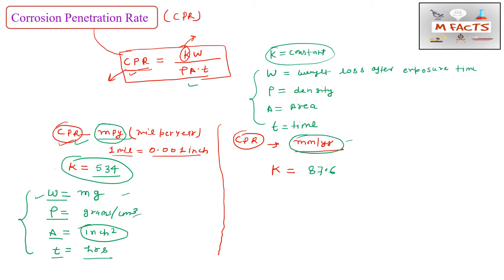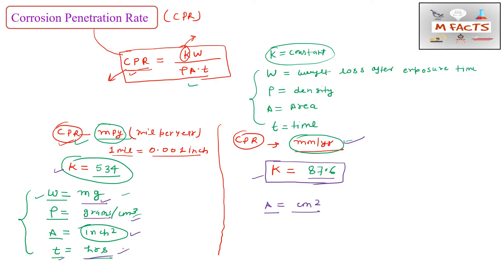To summarize: when calculating CPR in mils per year, use k = 534, W in milligrams, ρ in g/cm³, area in inches squared, and t in hours. When calculating in mm per year, use k = 87.6, and everything stays the same except the area must be in centimeter squared. This unit of area is the only thing that changes between the two unit systems.